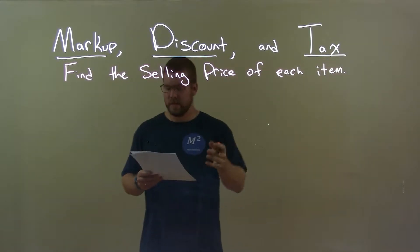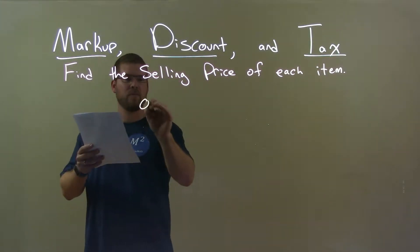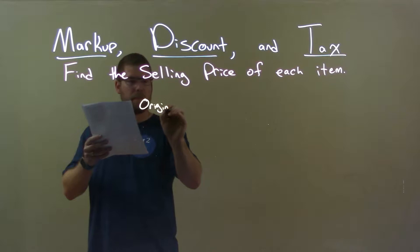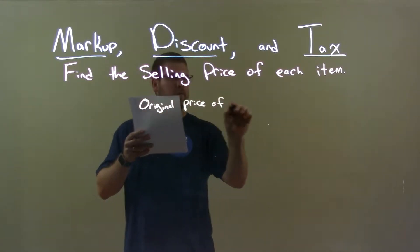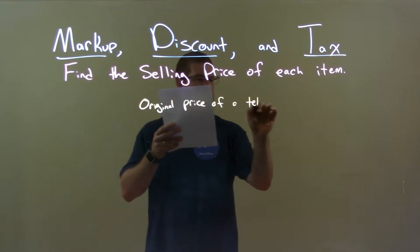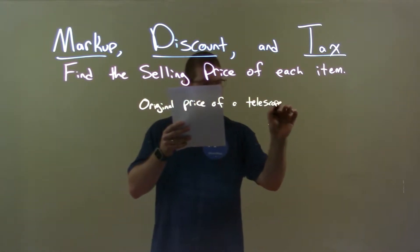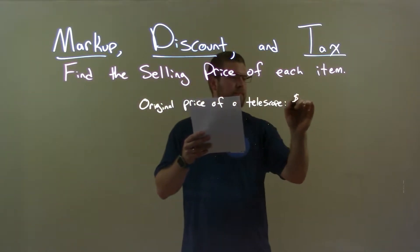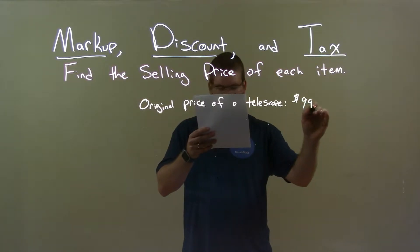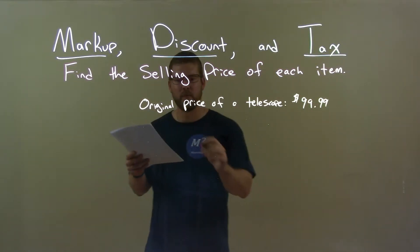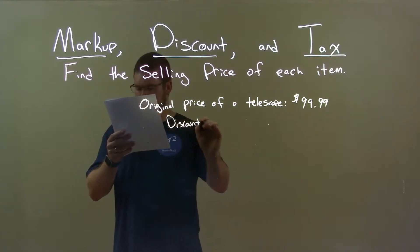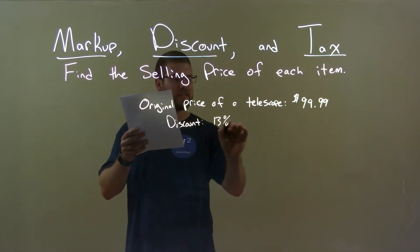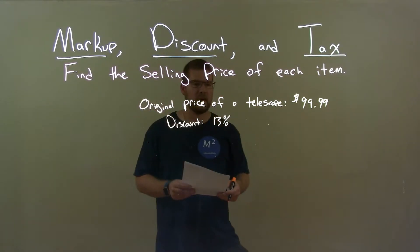So, if I was given this item, the original price of a telescope is $99.99. Alright, we got a discount, a discount of 13%, a 13% discount.